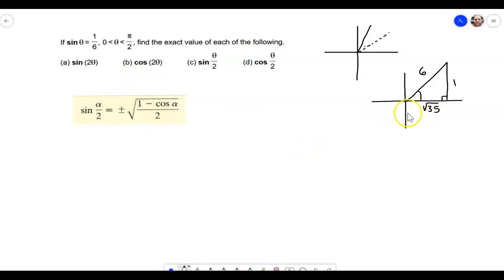And then we can easily find any of the other six trig functions just using SOHCAHTOA. So for this one, we need to know the cosine of that angle, angle alpha. So the cosine of alpha would just be the adjacent over the hypotenuse. So I'm going to write it right here. The cosine of alpha is just equal to, this is going to be positive because we're in the first quadrant, square root of 35 over 6.